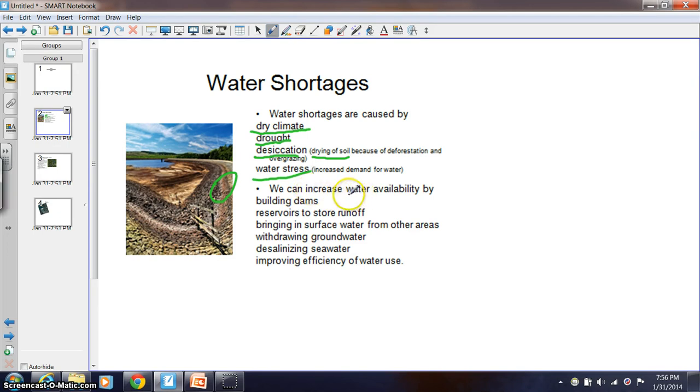We can increase water availability by building dams. With dams, what it does is it stores water. Essentially we slow down the flow of a river by creating a wall of cement, and behind that wall, upstream of that wall, is what we call a reservoir. So that reservoir floods the surrounding area and we can draw water out of that reservoir.